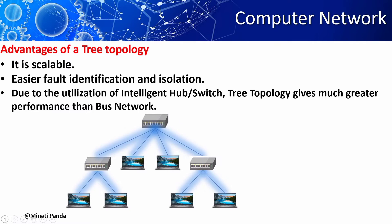It is easy to find faults in tree topology. Here we are using hub and switch, which enhance the performance of tree topology. If one or more nodes have failed in the network, it does not affect the entire network — the network can still continue to operate.